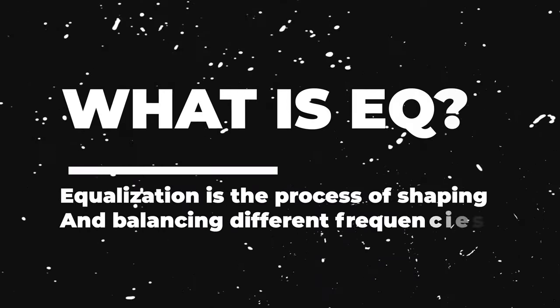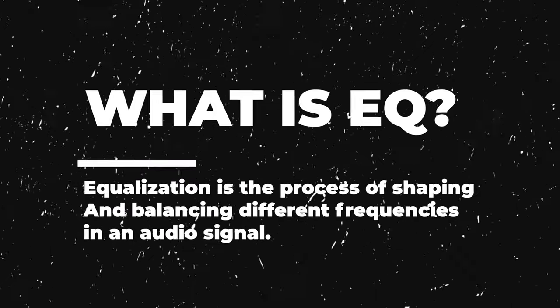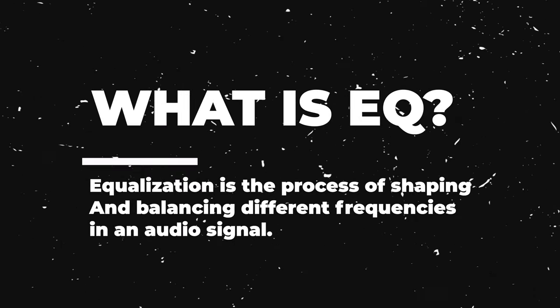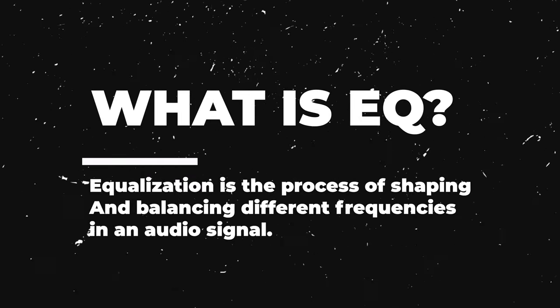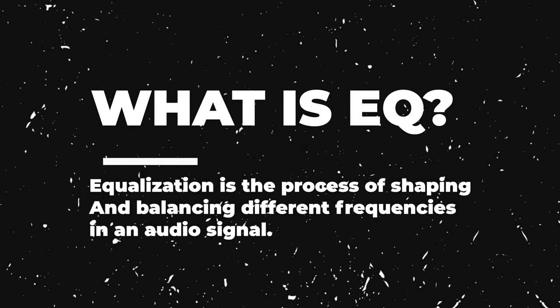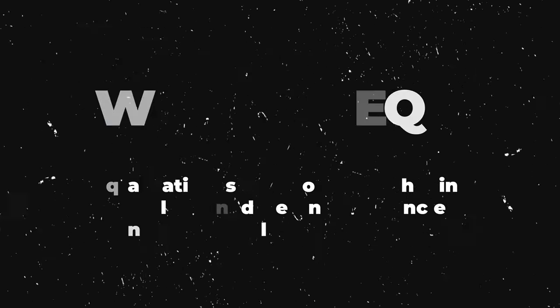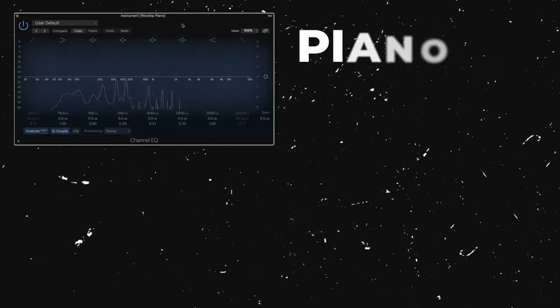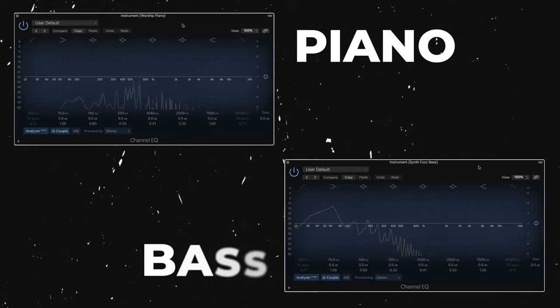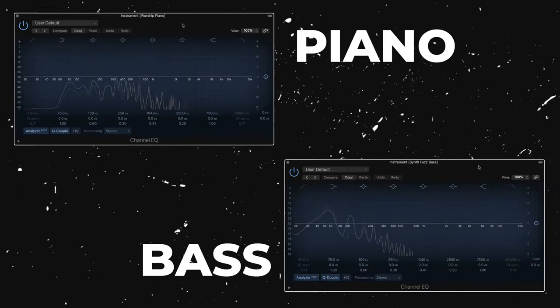EQ is short for equalization, which is the process of shaping and balancing different frequencies in an audio signal. Each instrument you hear has a unique mixture of frequencies that make it sound the way it does. We use EQ to cut out the frequencies that don't sound good and boost the ones that do.